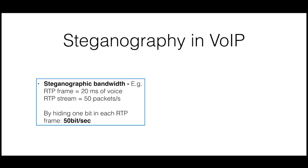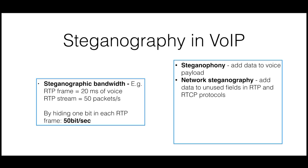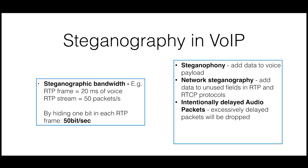Researchers have identified several techniques for VoIP steganography. Steganophony refers to adding additional data to the voice payload, taking care that the overall quality is still acceptable. Data can also be added to unused fields in VoIP-related protocols. Additionally, audio packets can be intentionally delayed, since packets that arrive late will be discarded by real-time multimedia protocols, but they can still be picked up by the covert channel endpoint.